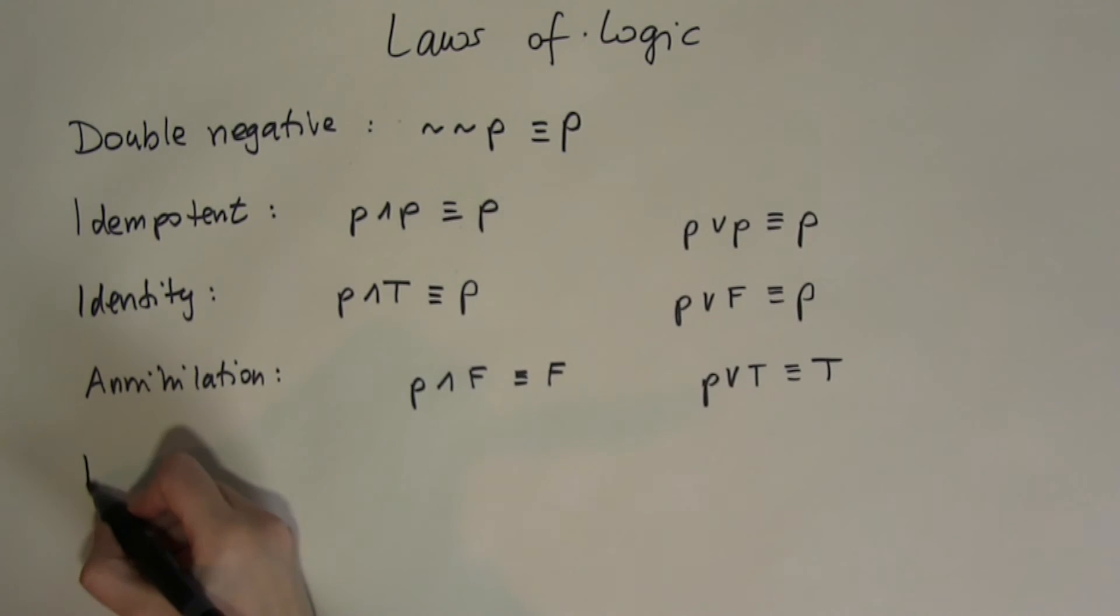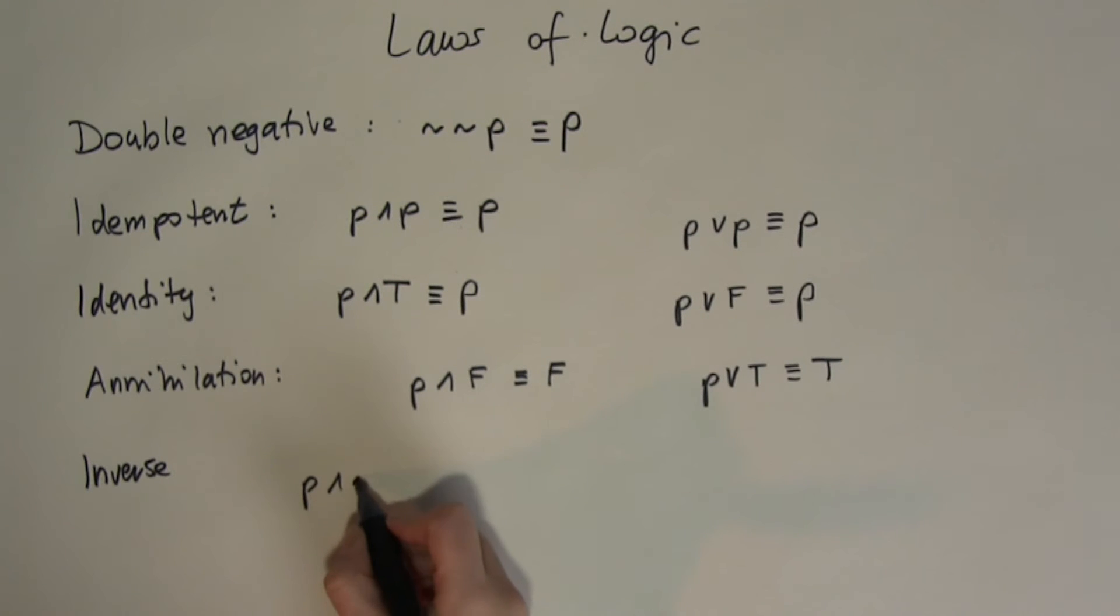The next law is the inverse law. So what happens if I add together P and not P? Well if P is true then not P is false and true and false gives me false. But what happens if P is false? If P is false then not P is true but false and true are still false. So in this case I'm always going to end up with a false answer.